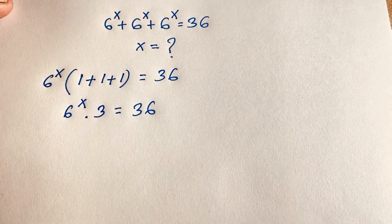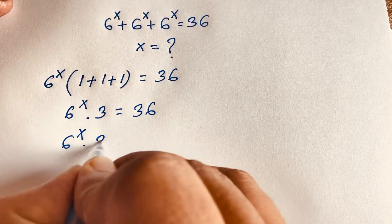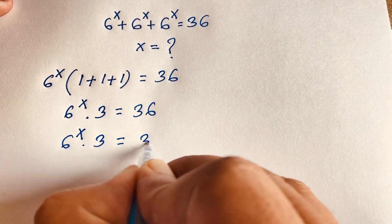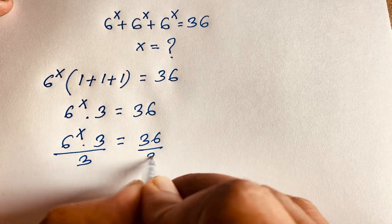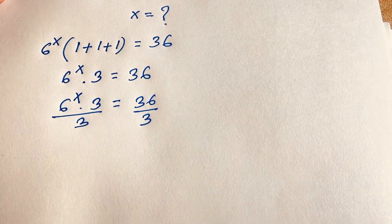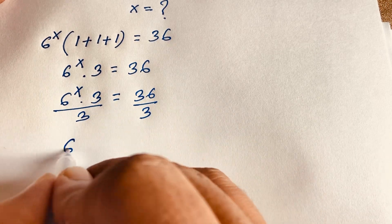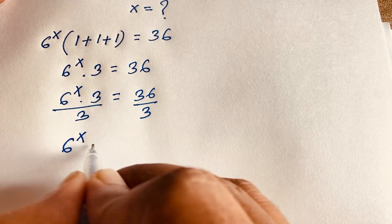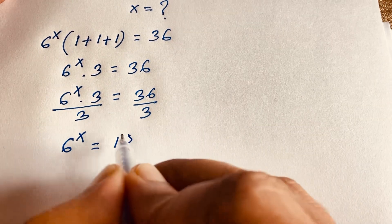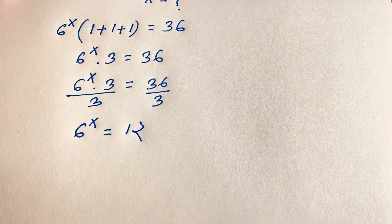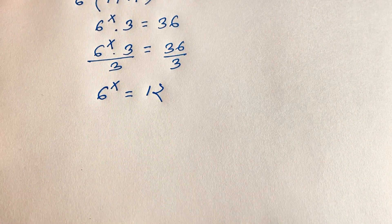Now we find out that 6 to the power x times 3 is equal to 36. I divide both sides by 3 — the 3s cancel out — and we find out that 6 to the power x is equal to 36 divided by 3, which will be 12. So we find out that 6 to the power x is equal to 12.